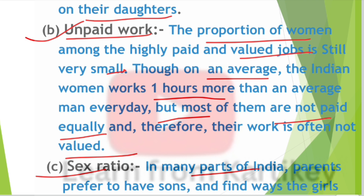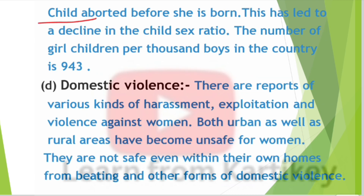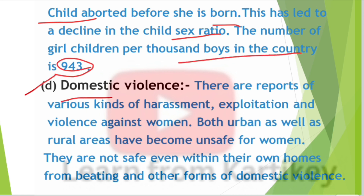Next — sex ratio: in many parts of India, parents prefer to have sons and find ways to get the girl child aborted before she is born. This has led to a decline in the child sex ratio. The number of girl children per thousand boys in the country is 943.